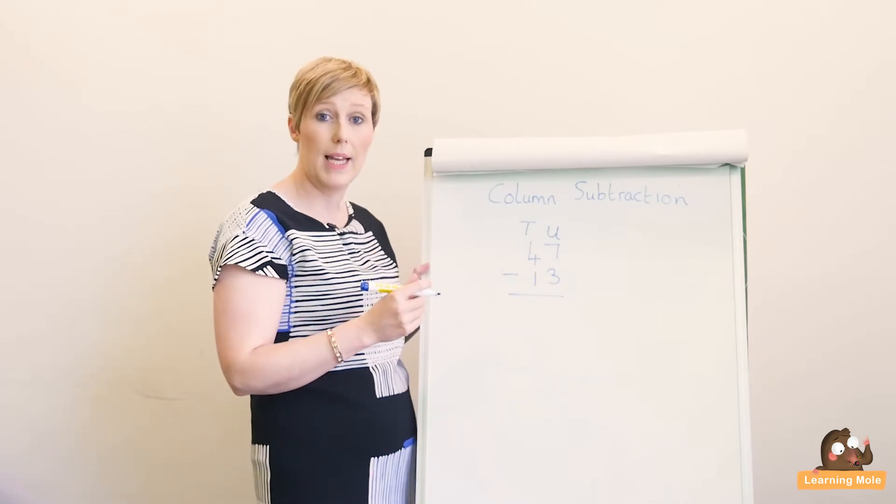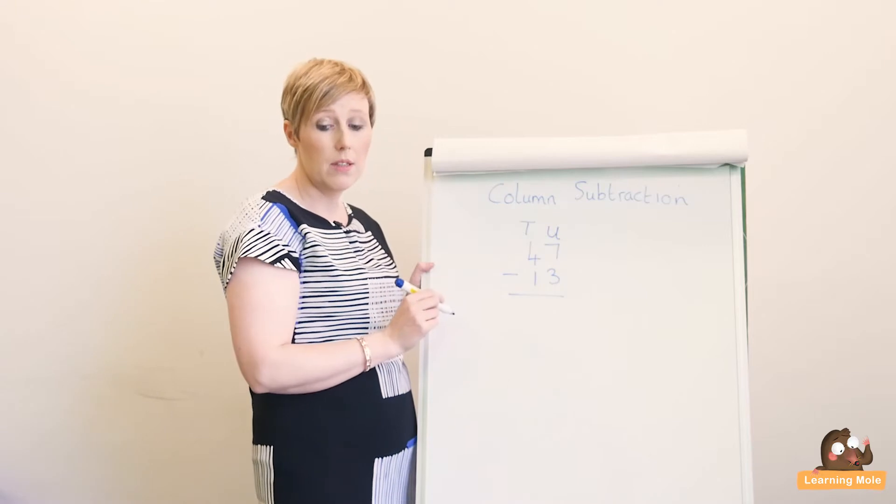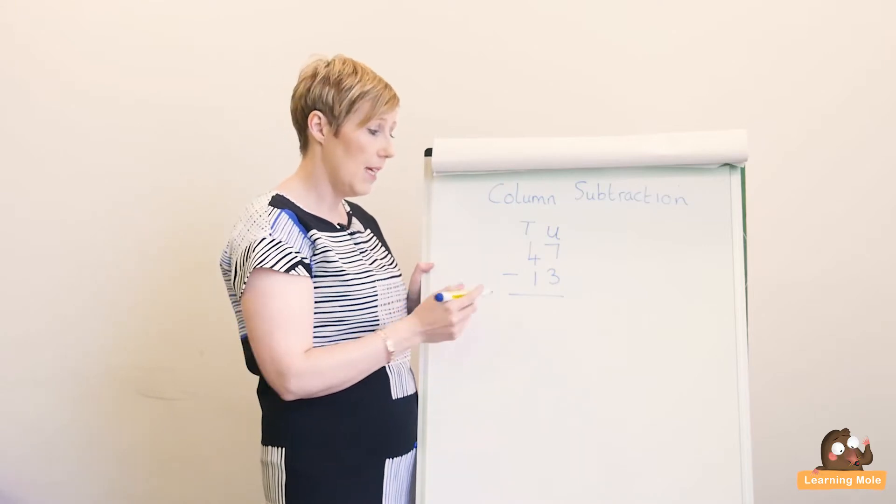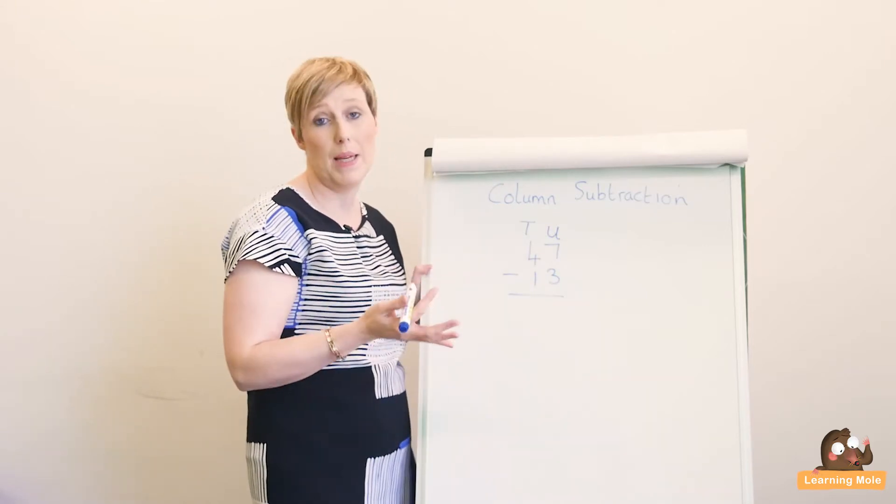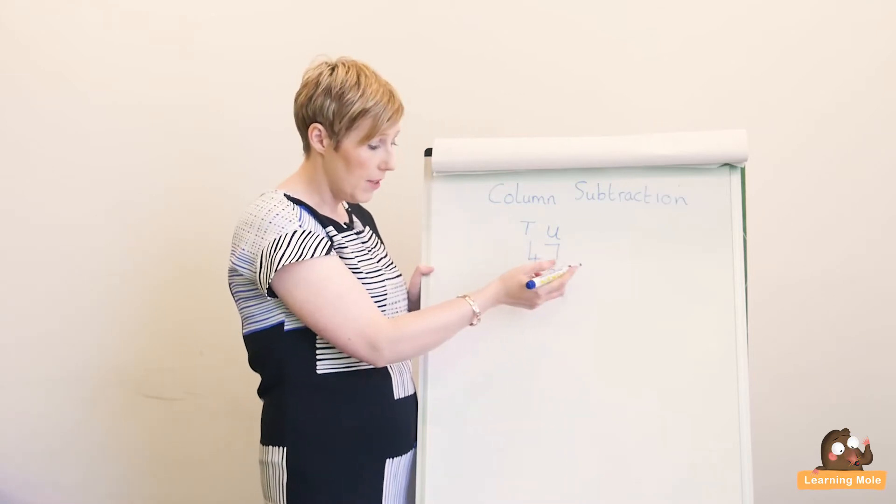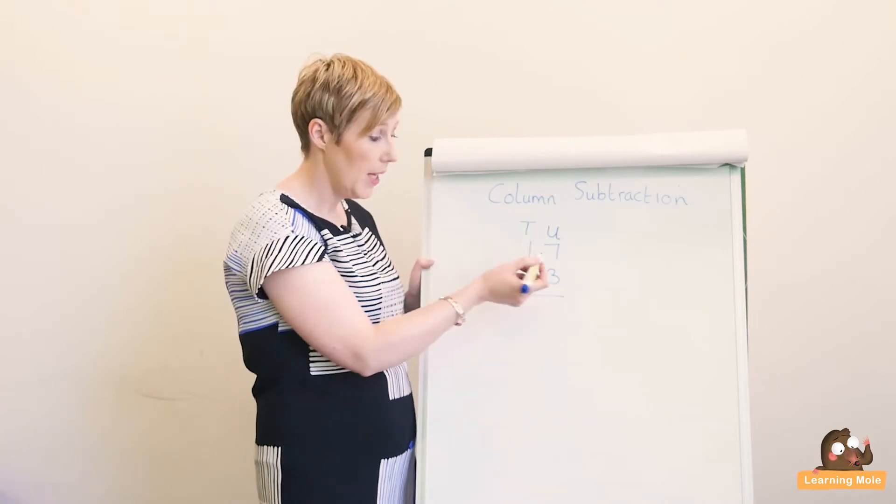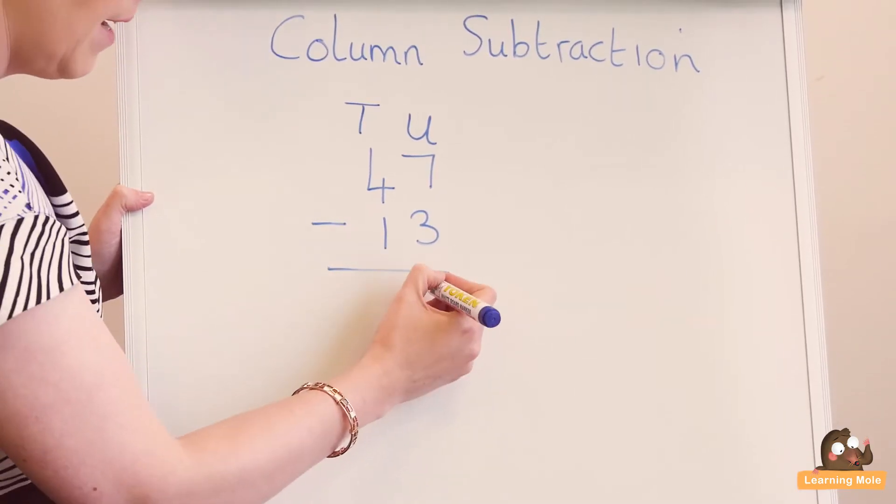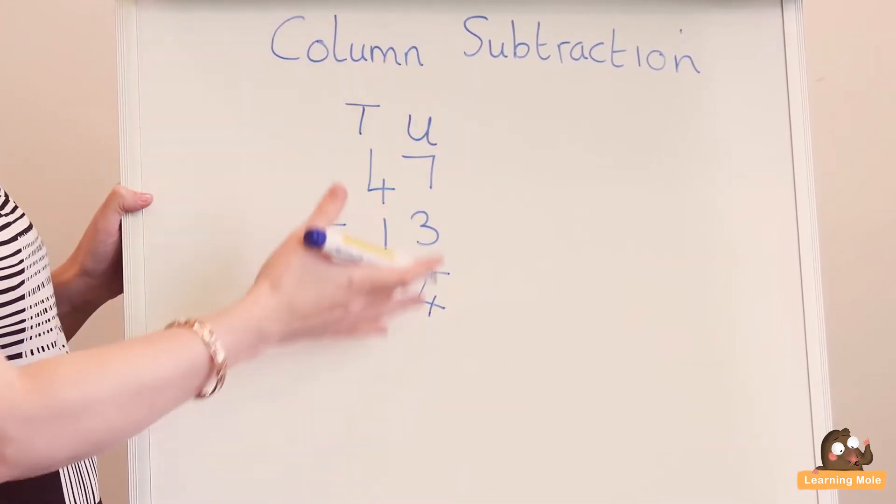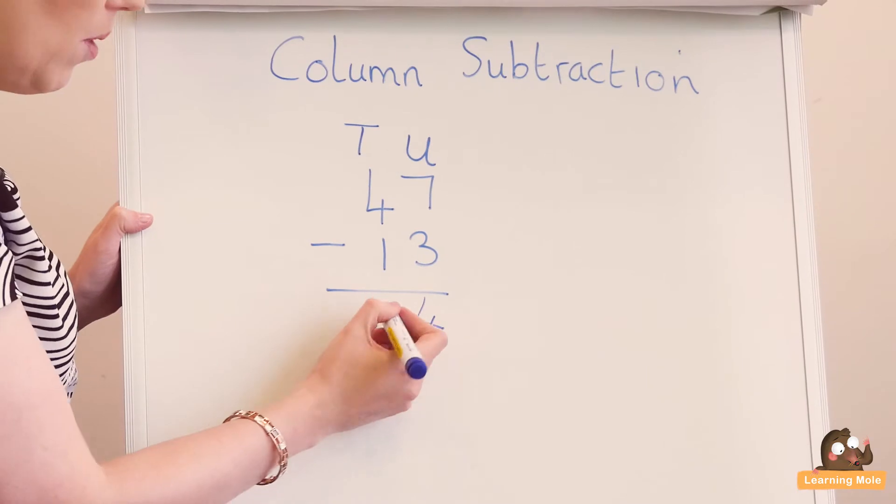We always start with the units. We start taking away the top number from the bottom. The biggest number is on the top, and it's always important to tell them that the biggest number must go on the top. So seven take away three gives us four, and they write their four down there. That's their units completely done. Then their tens: four take away one, which is three.